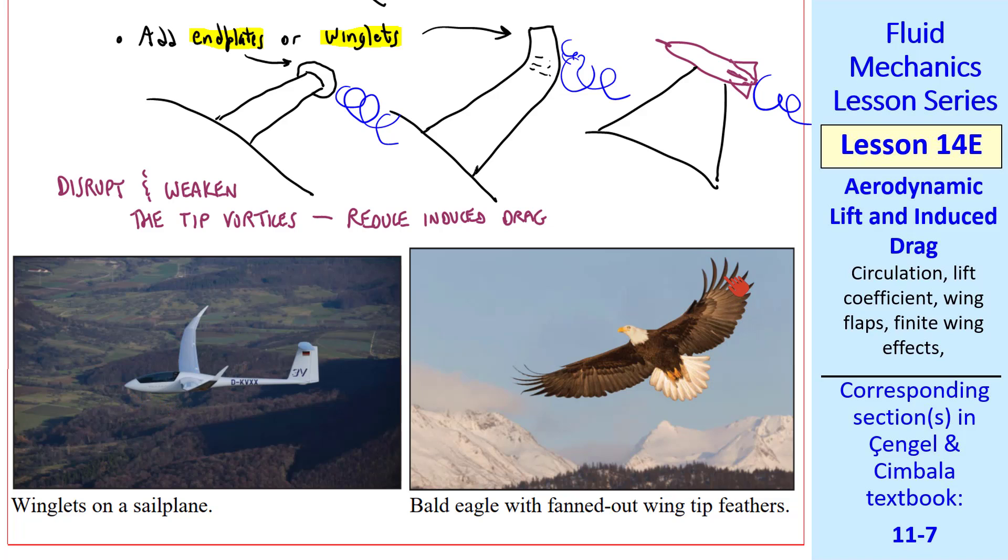Finally, birds have winglets. They fan out their tip feathers. Here's a bald eagle with fanned out wingtip feathers. We see that our creator designed these birds with the ability to control their wingtip feathers, not only to reduce drag, but also to help control their flight with fine adjustments.